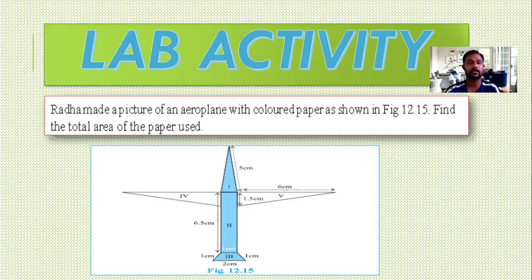First part is an isosceles triangle with two equal sides as 5 cm and base as 1 cm. See the second part. It is a rectangle whose length is 6.5 cm and breadth is 1 cm. See the third part.